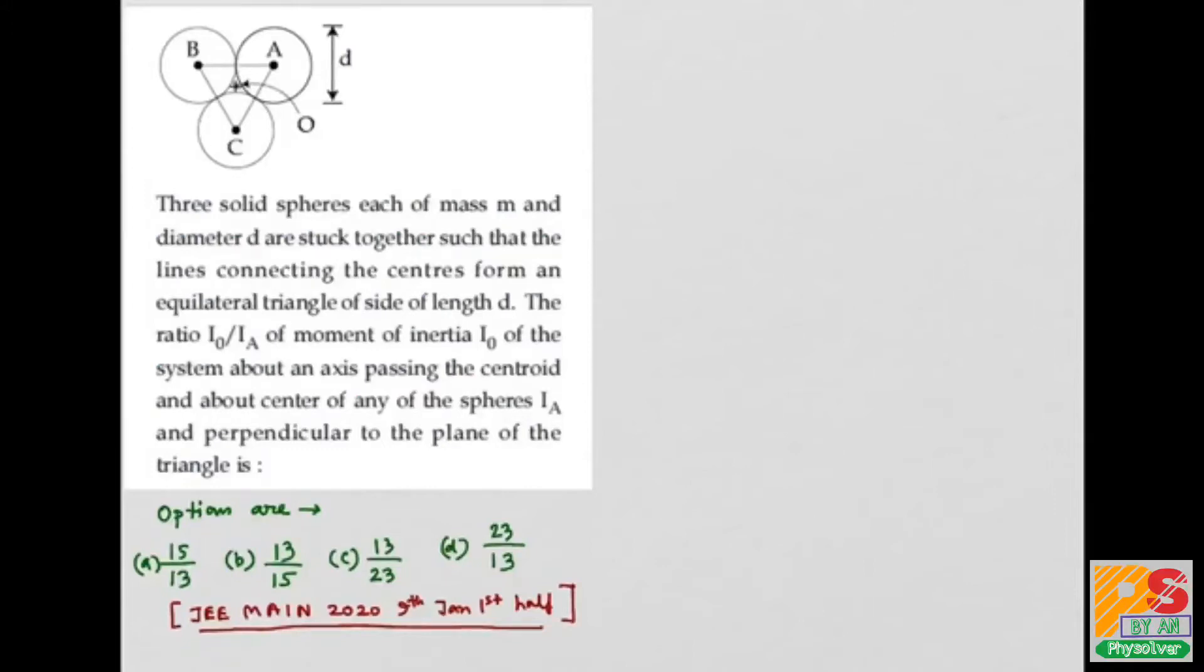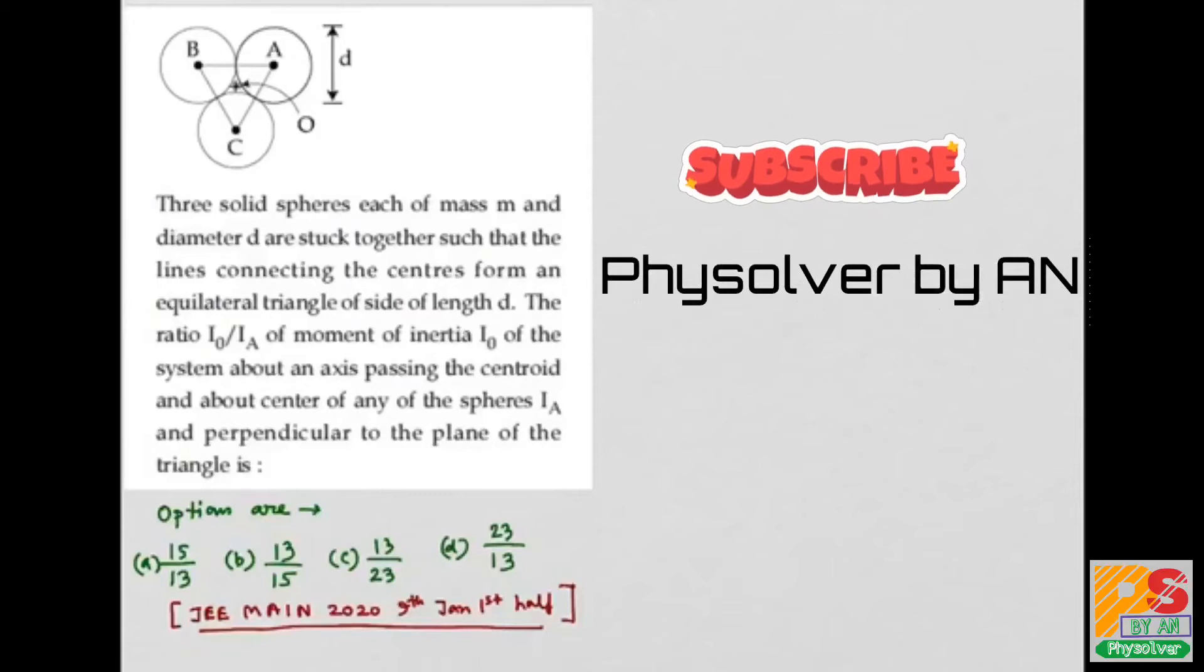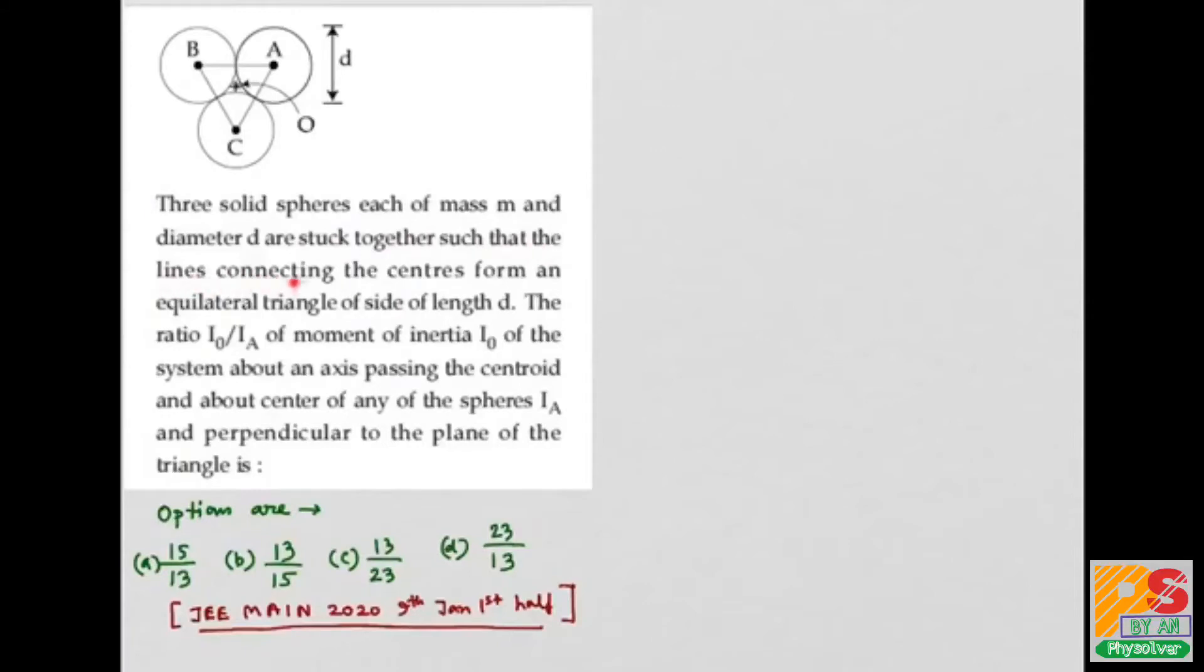Hello students, the question is: three solid spheres each of mass M and diameter D are stuck together such that the lines connecting the centers form an equilateral triangle of side length D. The ratio I_O by I_A of moment of inertia, where I_O is the moment of inertia of the system about an axis passing through the centroid O, and I_A is the moment of inertia about the center of any of the spheres A, perpendicular to the plane of the triangle. The options are given. This question is taken from JEE MAIN 2020, 9th January, first shift.